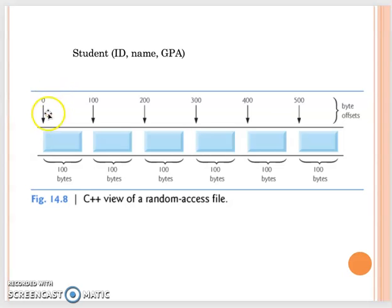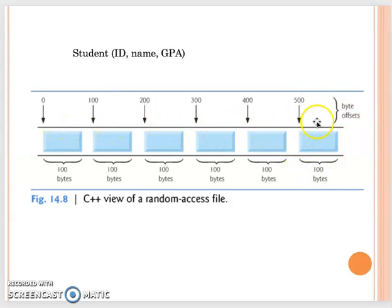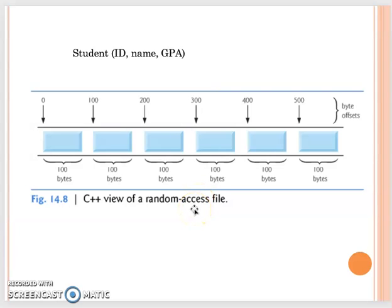When we create a random access file, we allocate space depending on how many student objects we want. They are stored sequentially, but because we know each student object is 100 bytes, if we want to find the sixth student we can jump directly to that position and retrieve or update that student object. That's the random access file. Because each data size corresponds to the student object, it is stored in binary format and cannot be directly viewed or read from a text editor. After your lab exercise, we will talk about the random access file, and for your homework assignment you will practice on that.